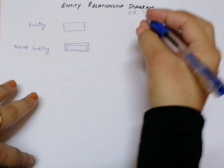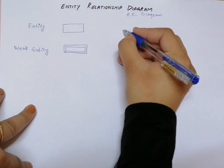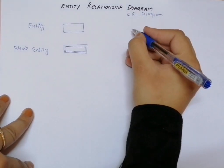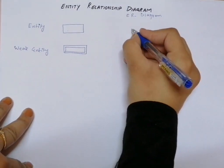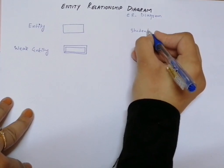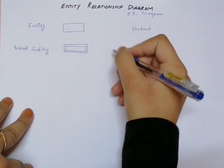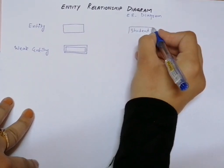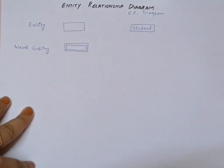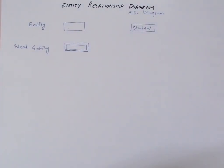Let's take an example. If I am discussing a student, student is an entity that has its own unique existence. So in order to represent student, I will write 'student' and enclose this word in a rectangle like this. This represents a student that has its own properties.